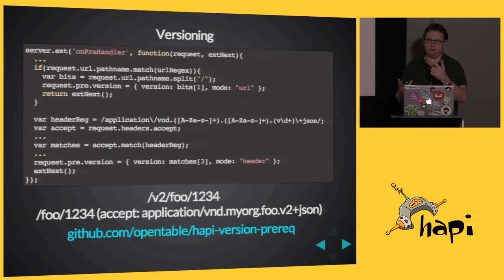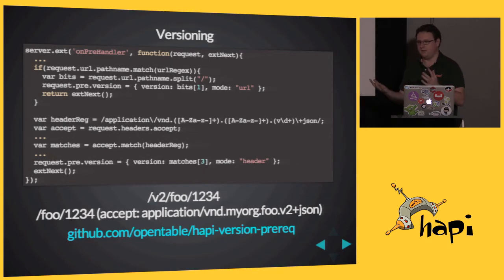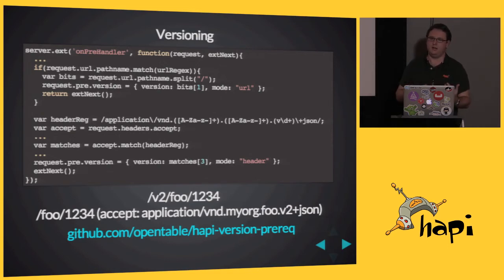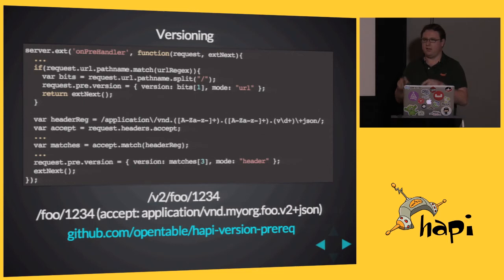If you're not covering things that happen in the lifecycle, there are the server events as well. You've got error, log — so anytime server.log is called, it fires an event. Anytime server.error is called, it fires an event. And you've got the other interesting ones: request, obviously, and tail. If you don't know about tail, it's basically when the request is just about done and the response has been sent, then the tail event is fired. That's kind of the last event in the lifecycle.